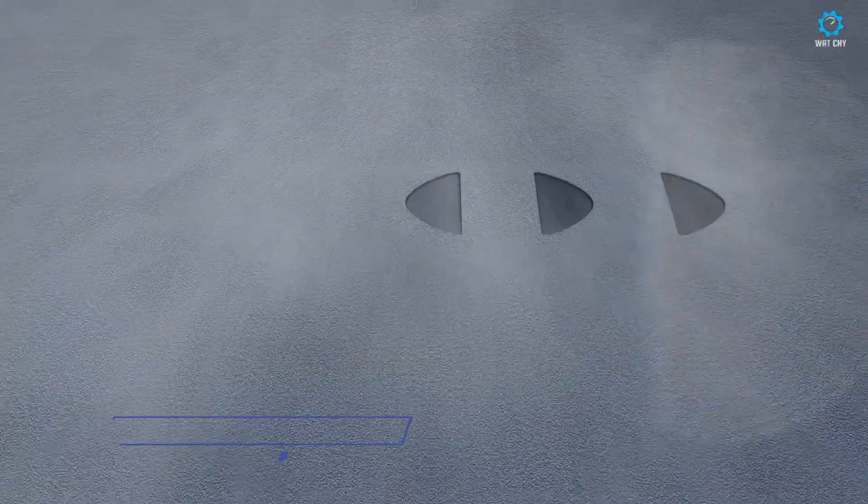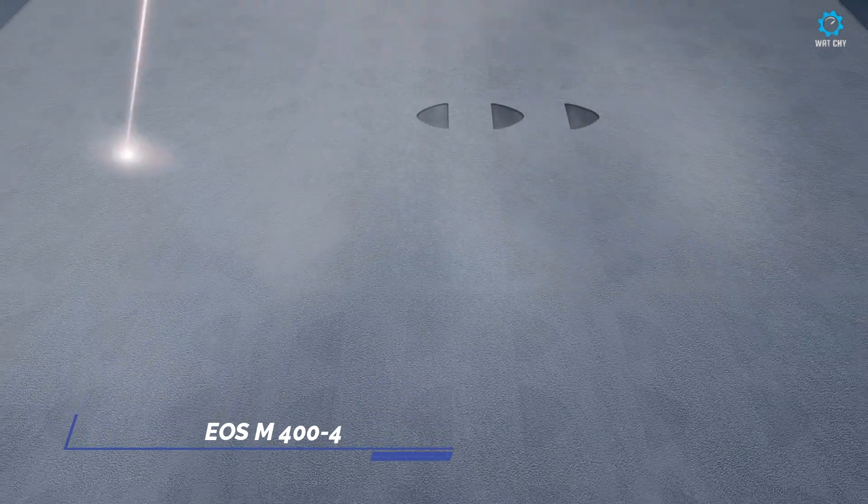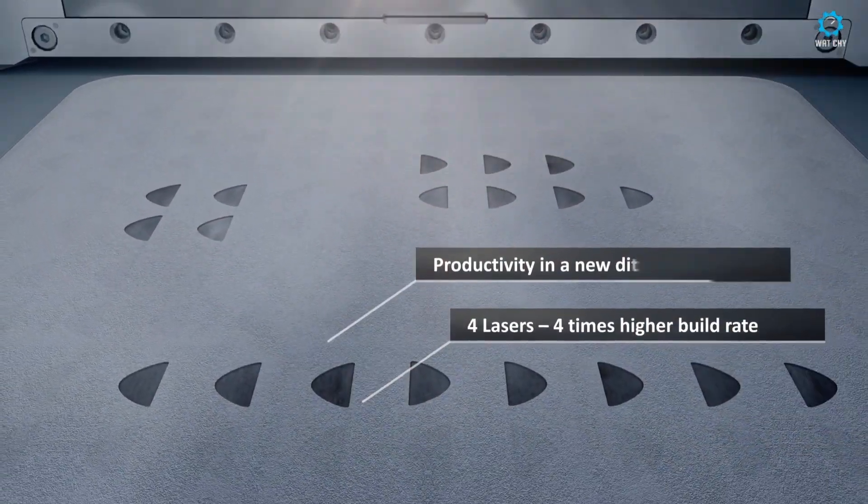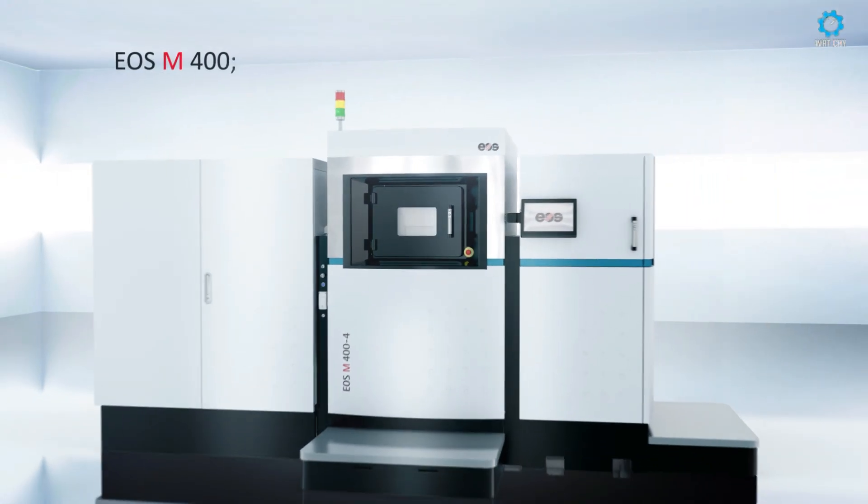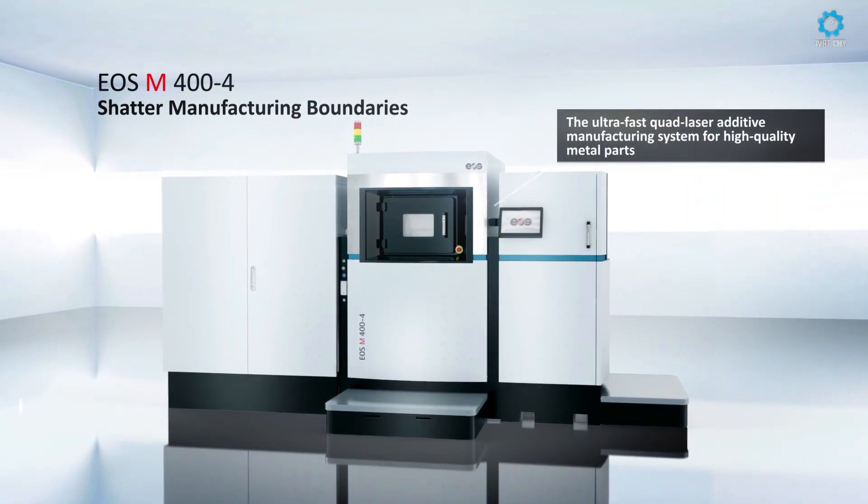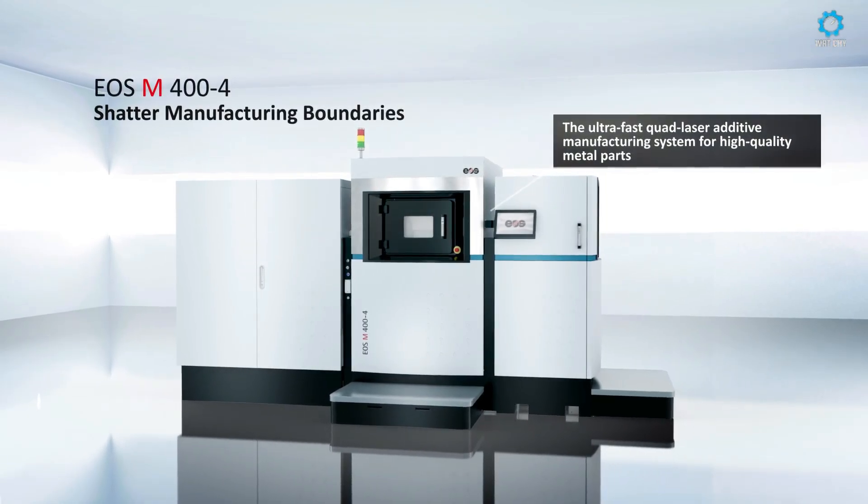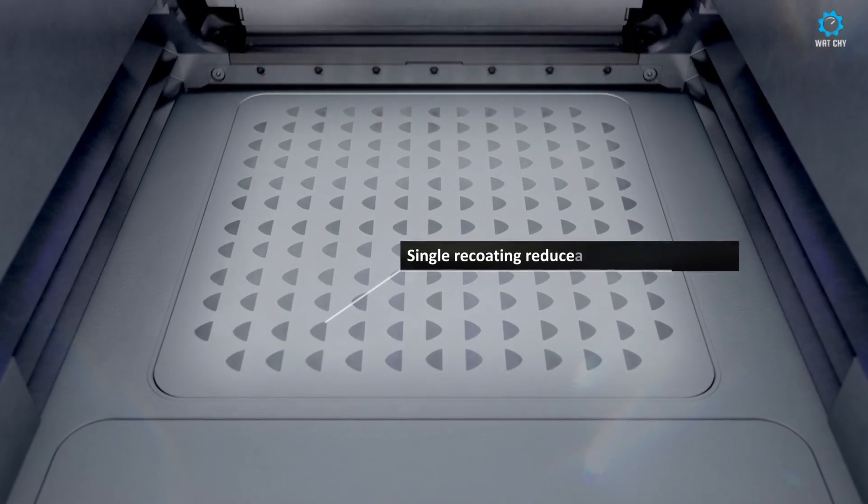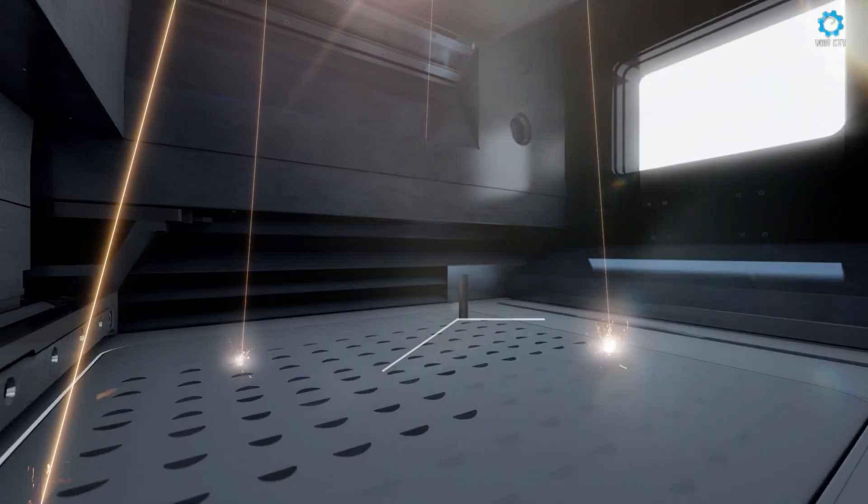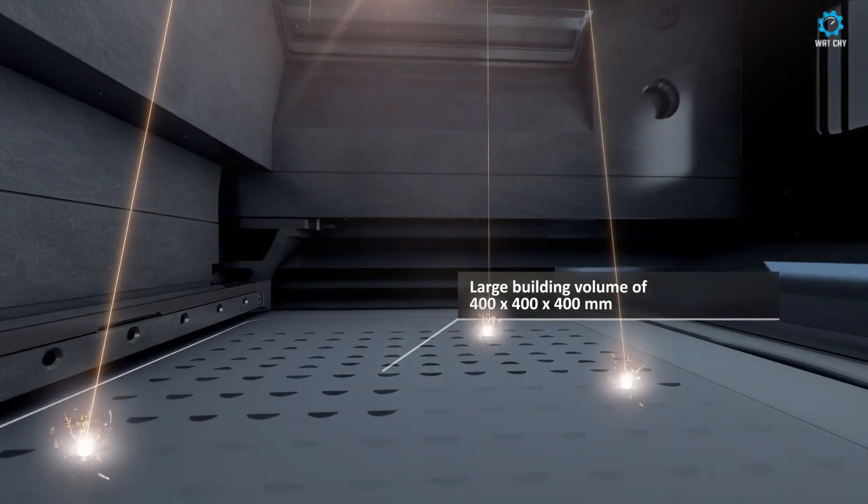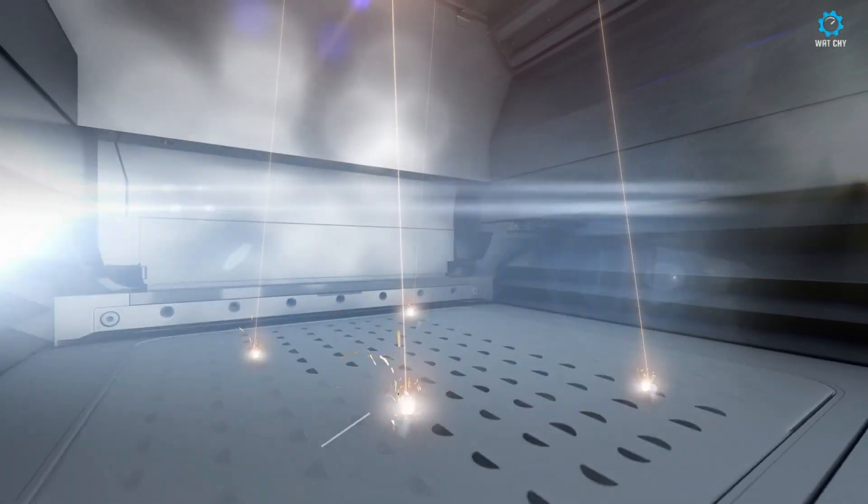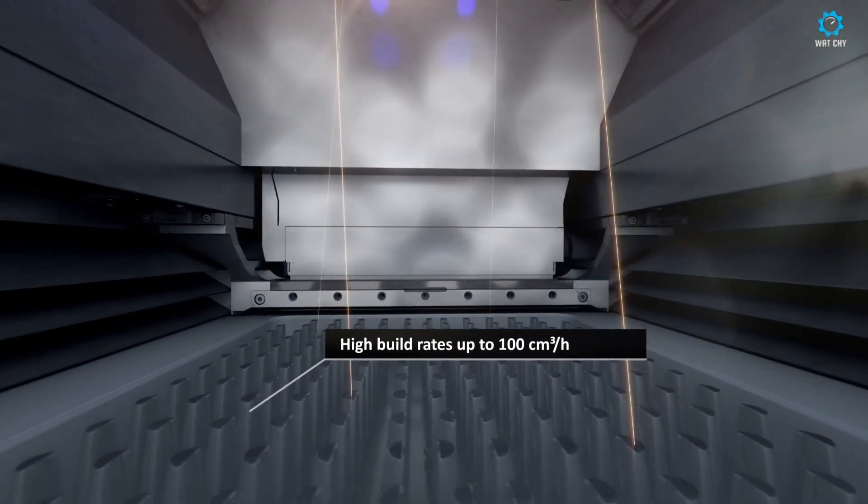The EOS M404 is a flagship metal 3D printer from the US designed for high-performance industrial manufacturing. This machine leverages the power of four 400-watt lasers to drastically reduce print times, making it ideal for large volume production. Its spacious build volume of 400x400x400mm is perfect for creating parts ranging from small, intricate components to large-scale functional parts, particularly in industries like aerospace, automotive, and medical devices.